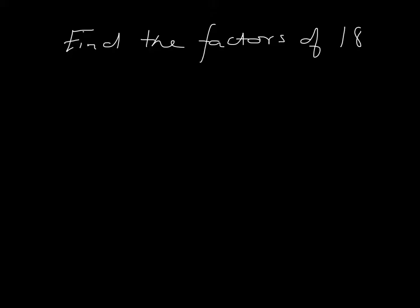So we're going to start right at the beginning and ask ourselves, does 1 go into 18 with no remainder? Well, obviously, 1 divides into anything with no remainder. So 1 is a factor. But to help ourselves, we are also going to put down any factor with its partner. Because 1 times by 18 gives me 18. So the factor 1 has a partner factor 18.